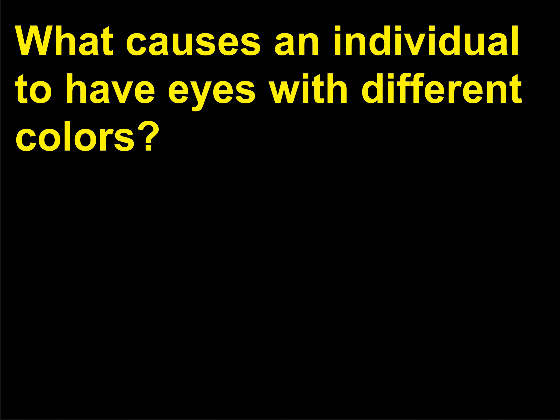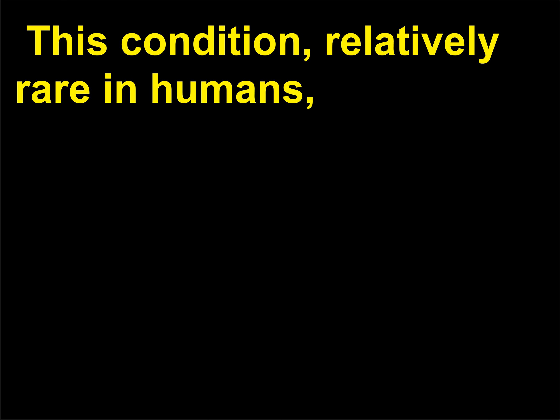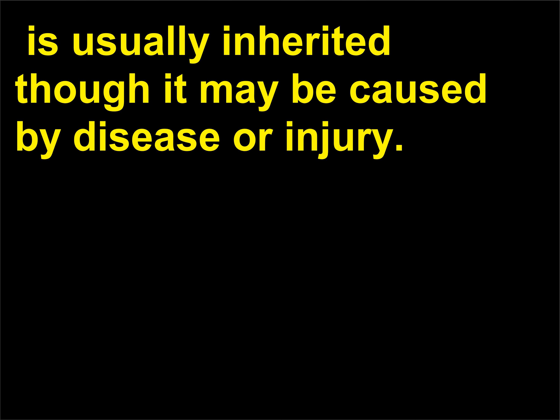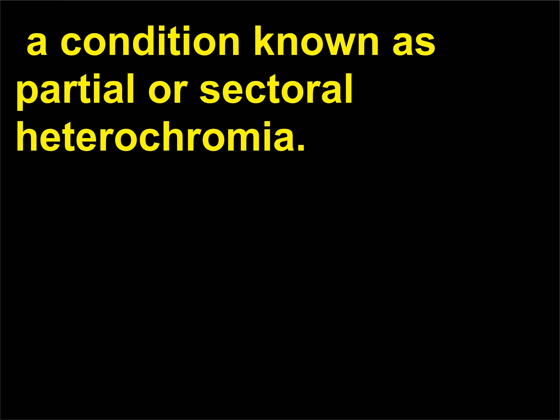What causes an individual to have eyes with different colors? Heterochromia is a condition in which one iris is a different color from the other iris. This condition, relatively rare in humans, is usually inherited, though it may be caused by disease or injury. In some cases, one part of one iris is a different color from the rest of the iris — a condition known as partial or sectoral heterochromia.